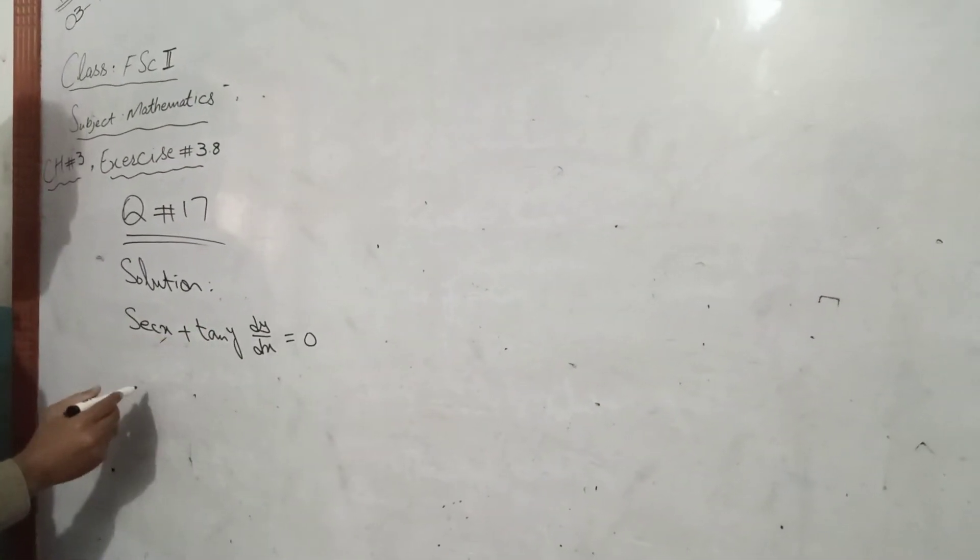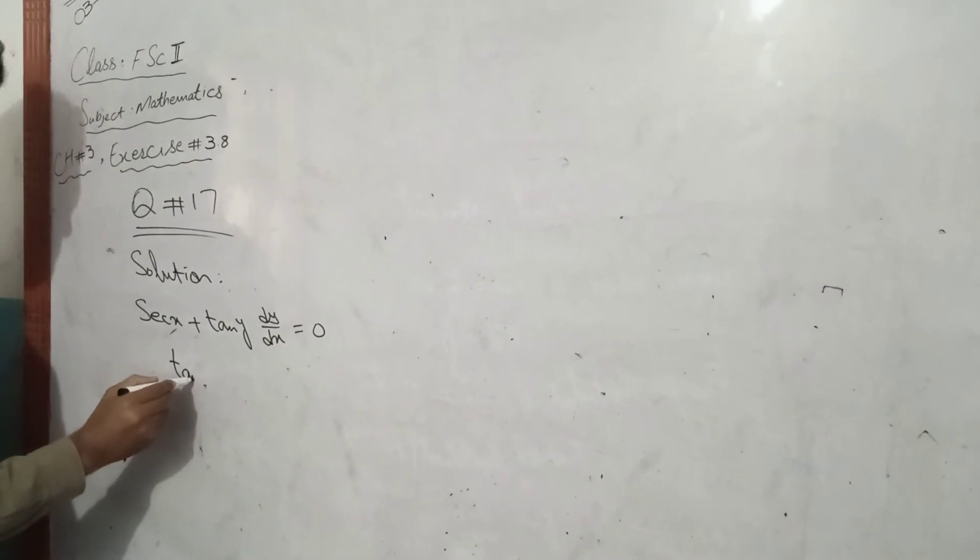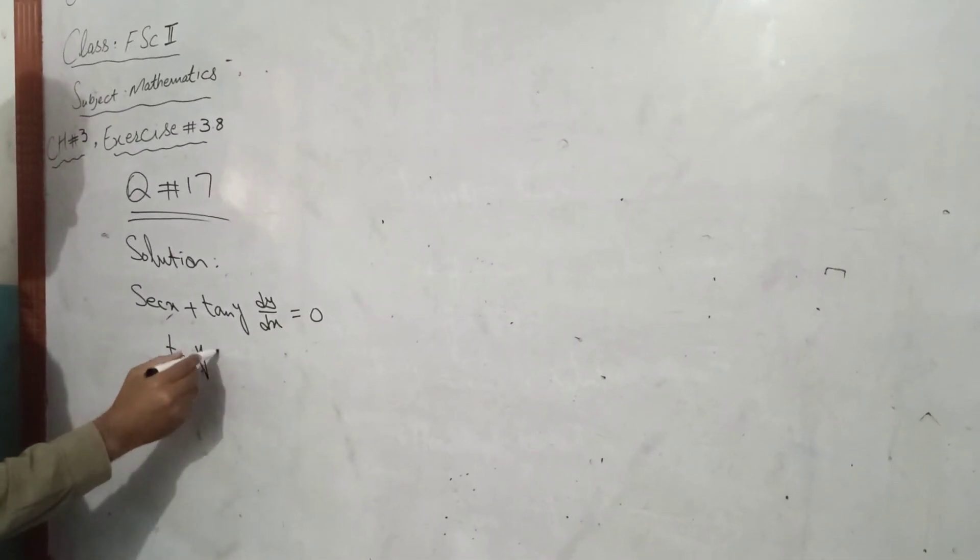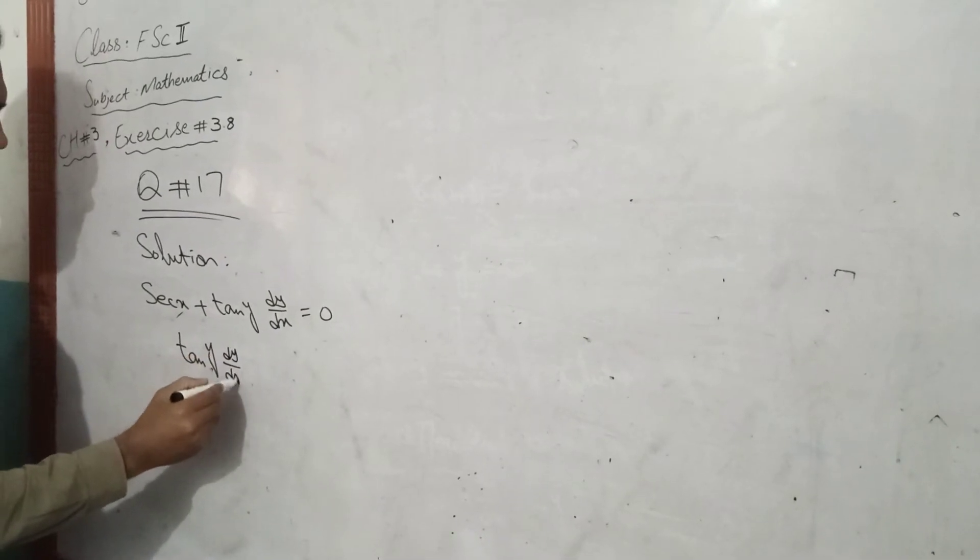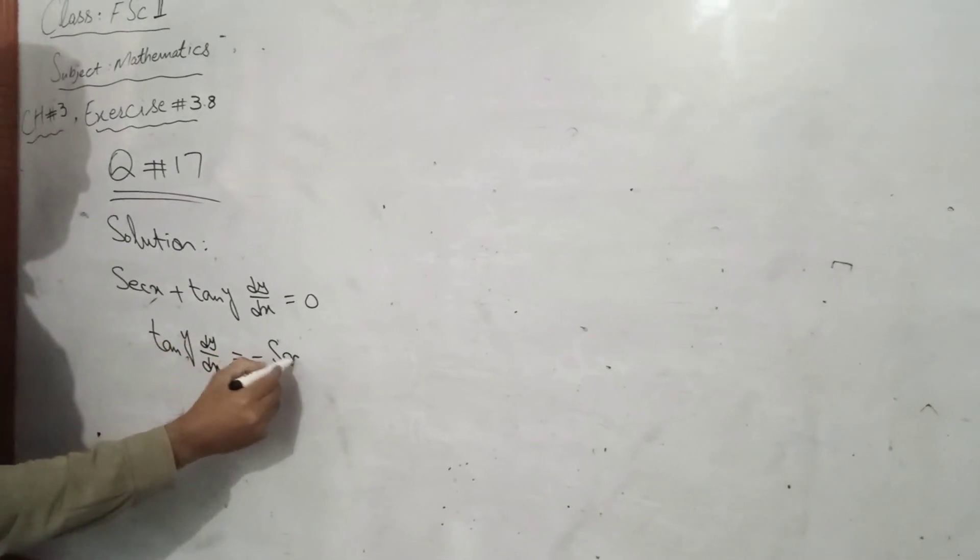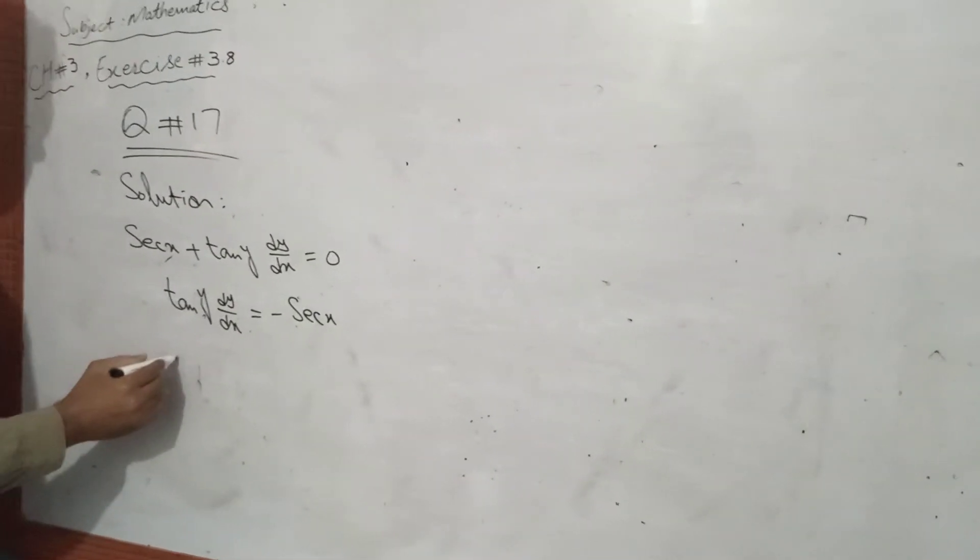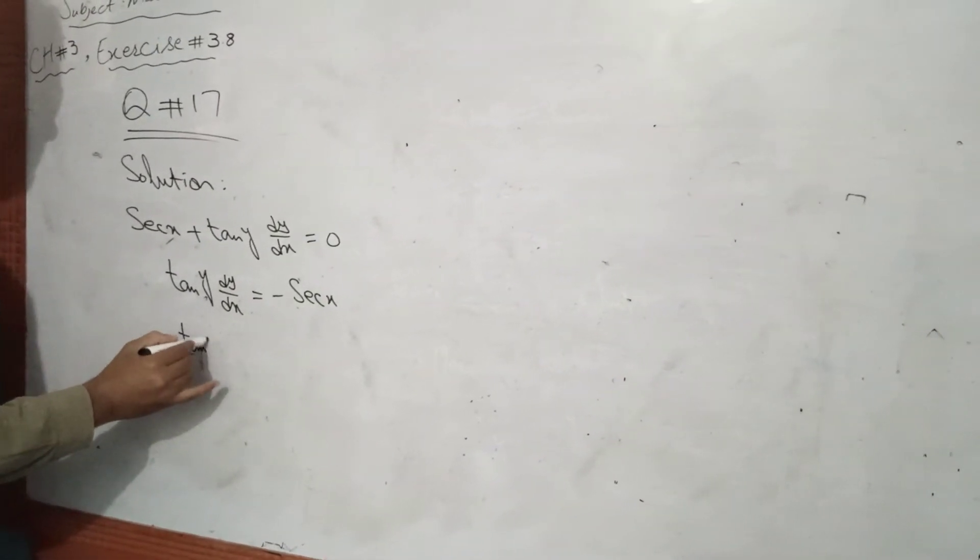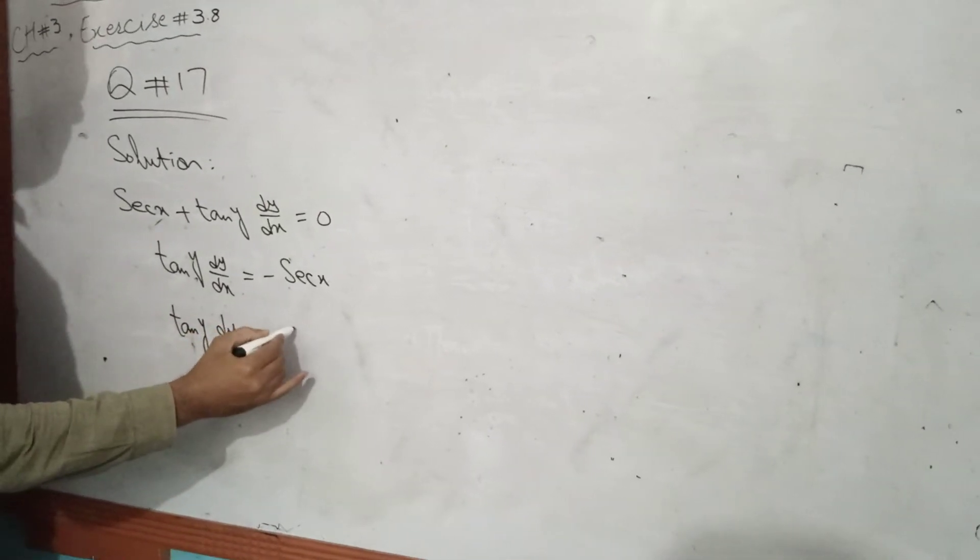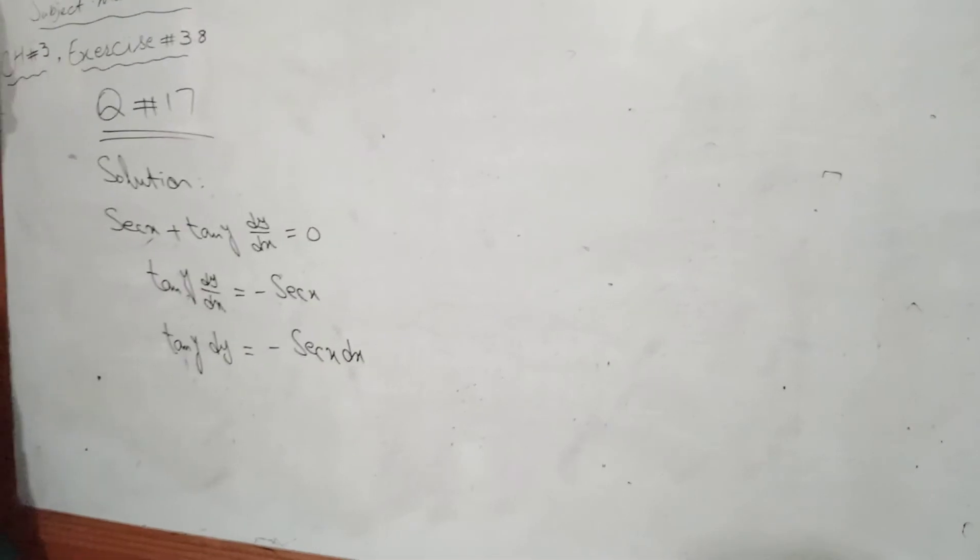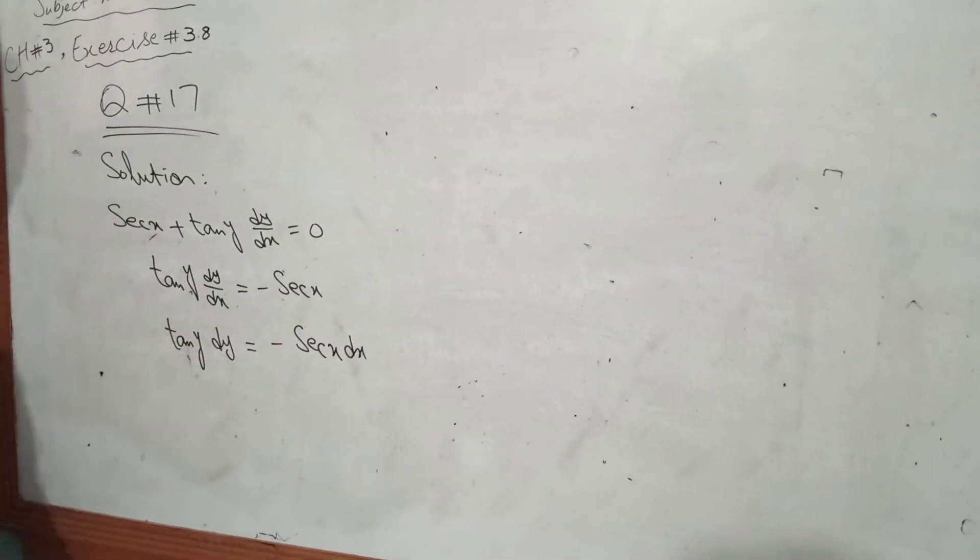So, here is the second x is going to be 10y dy over dx equals to minus second x. 10y dy equals to minus second x dx.